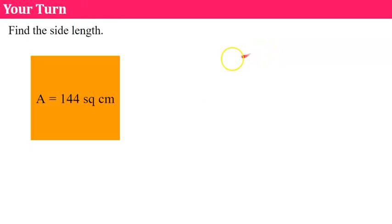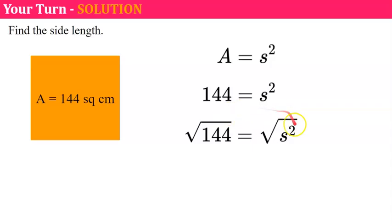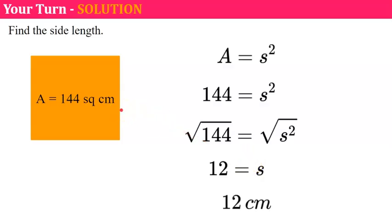Your turn — pause the video and find the side length of the square. Area equals s squared. We're given that the area is 144, so 144 equals s squared. Taking the square root of both sides: the square root of 144 is 12 because 12 times 12 is 144, and the square root of s squared is s. Therefore, the side of the square is 12 centimeters.